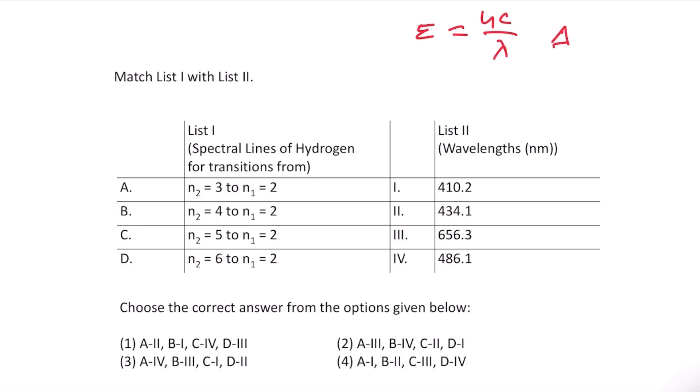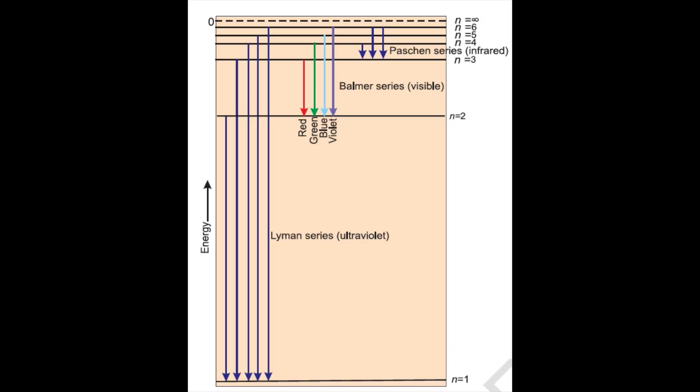Therefore, which one will have the larger energy gap? The transition n2 equals 6 to n1 equals 2 will have the largest energy gap and thus the lowest wavelength.